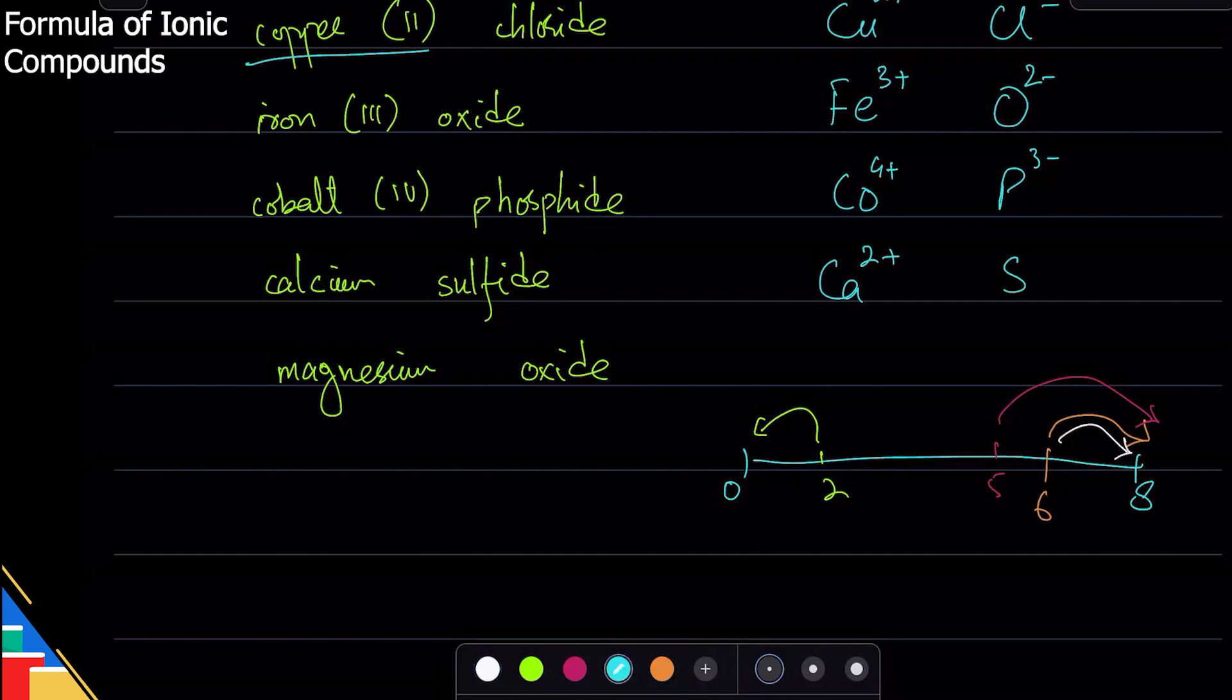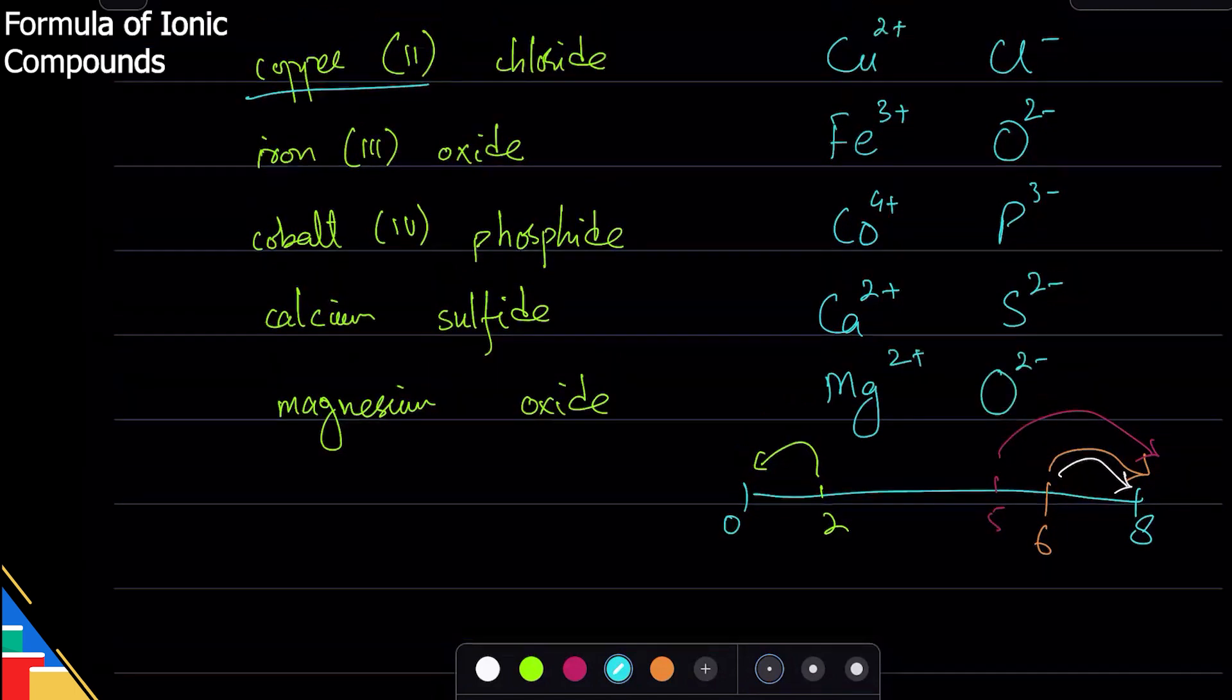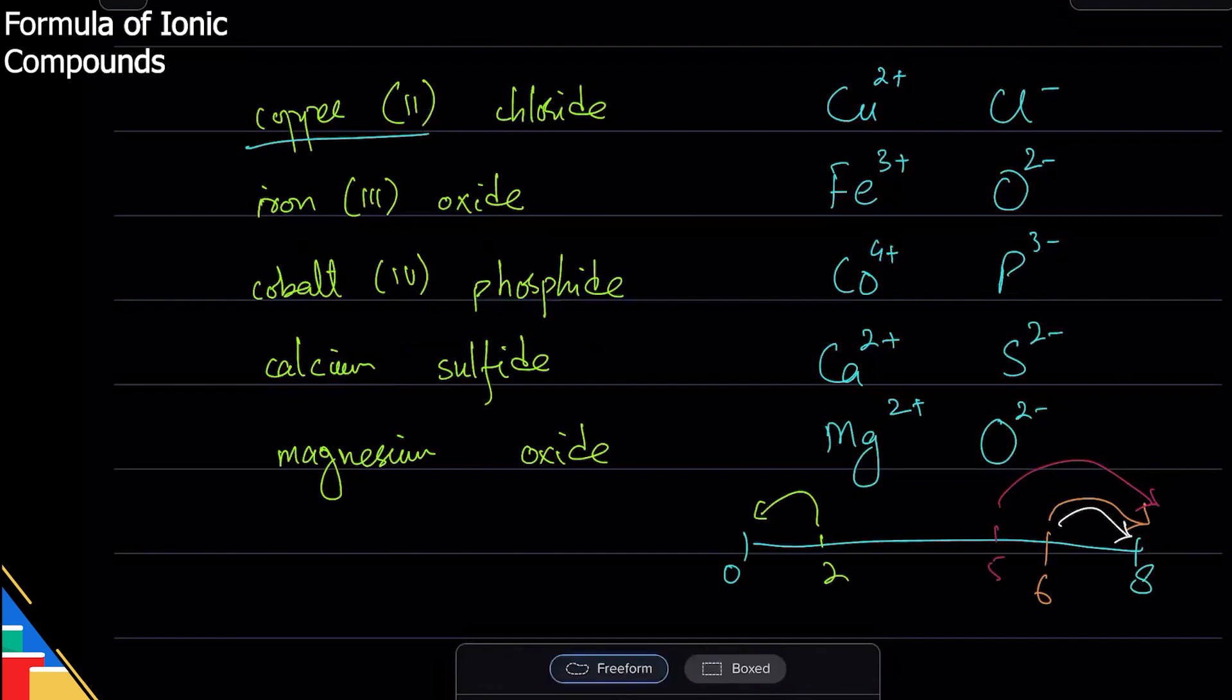Lastly, magnesium oxide: magnesium is in group two, so it will go to zero - that's plus two. Oxide we have already seen is minus two. That's how you name all these ions.